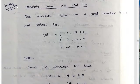Hello everybody. 5th semester BSE Mathematics, 1st paper Mathematical Analysis. In the 1st module, 3rd section is Absolute Value and Real Line.